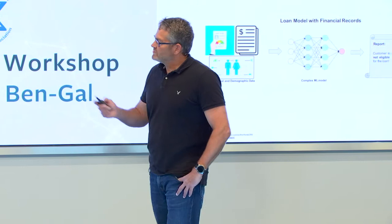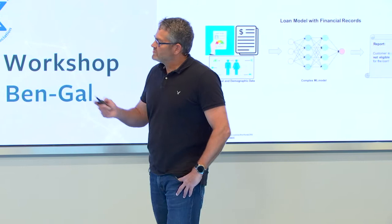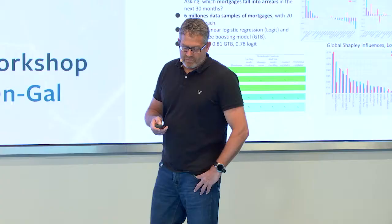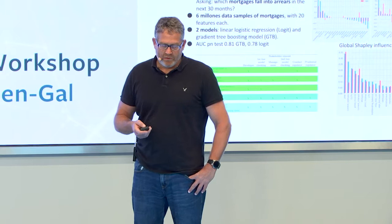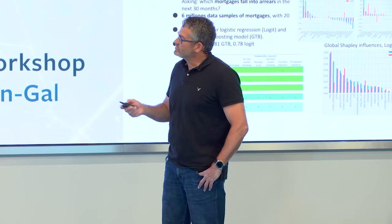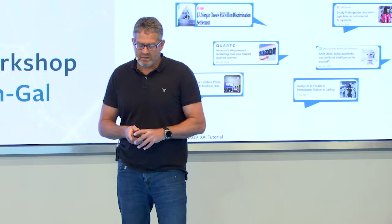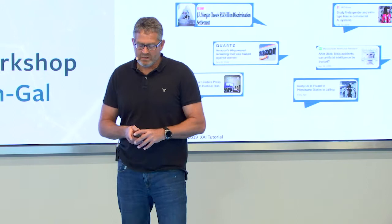The bankers need to understand the reasons for such decisions, which raises a lot of legal points. Here is a real example from the Bank of England, which used a system to learn from six million mortgage samples. The idea was to find which ones were actually errors. You can see the basic features representing both populations — those that finished the mortgages correctly and those that did not.